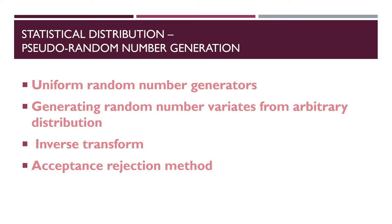Generating random variables from a desired distribution: any simulation that has random aspects must involve generating random variables from different distributions. The phrase 'generating a random variable' refers to obtaining an observation or realization of a random variable from a desired distribution. These distributions are often specified by fitting an appropriate form — for example, exponential, gamma, or Poisson. This will be covered in detail in coming videos.